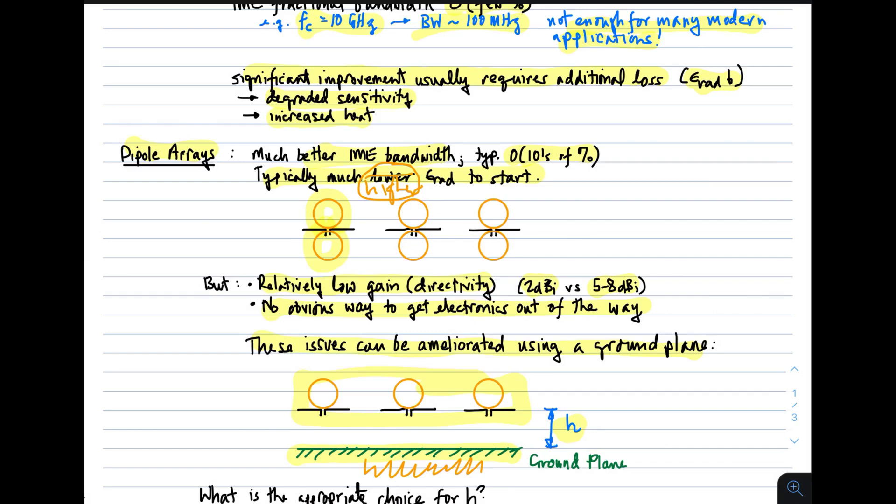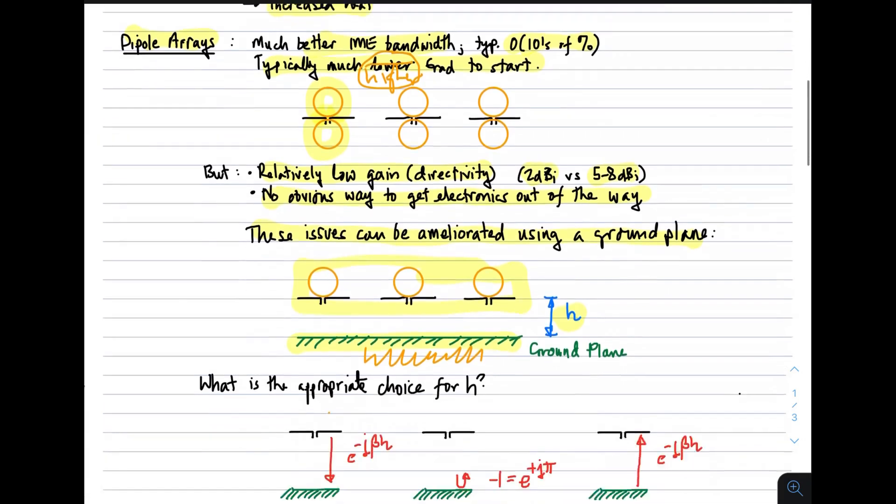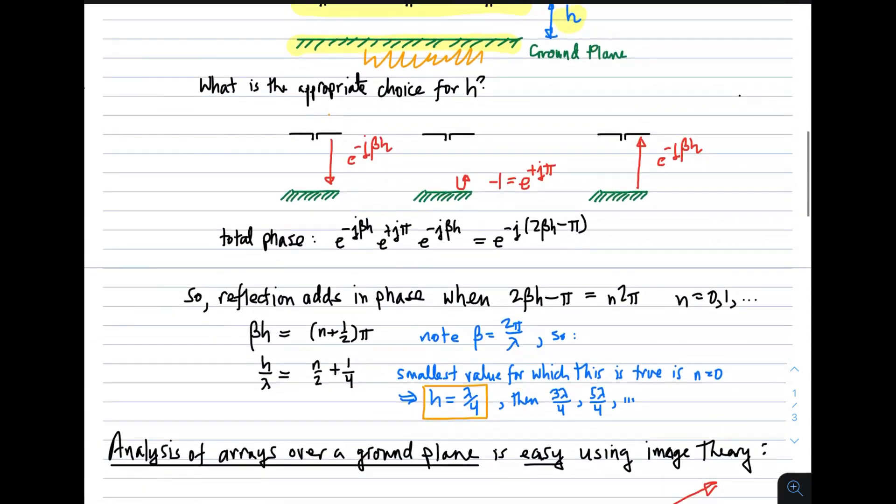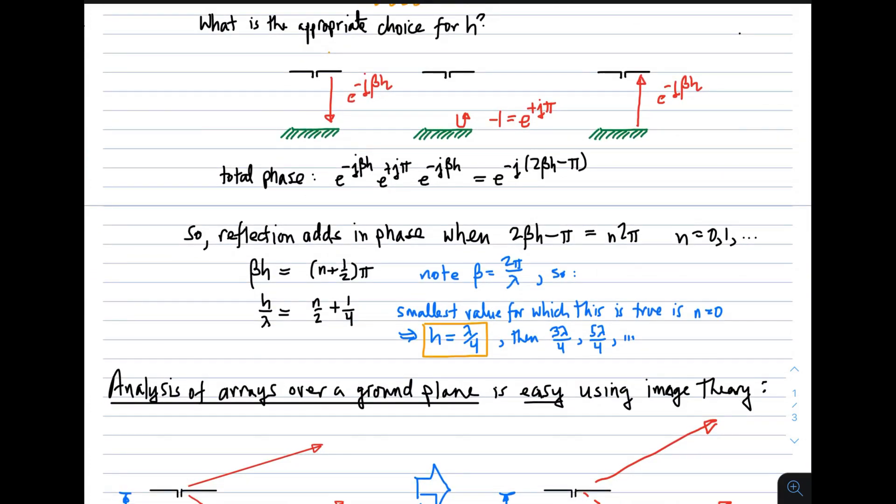Furthermore, the fields have to be completely above the ground plane, so the directivity of this arrangement must go up. How much it goes up is a question that we'll have to answer, but it's clear that the directivity is going to be improved by doing this, if for no other reason that the fields are contained to the upper half space, to half the available sphere. So, what is an appropriate choice for this spacing between the dipoles and the ground plane?